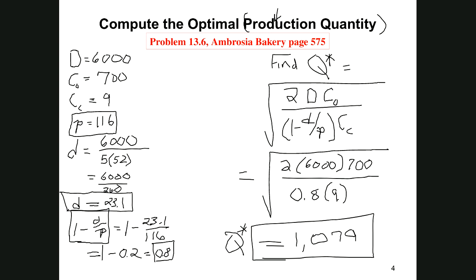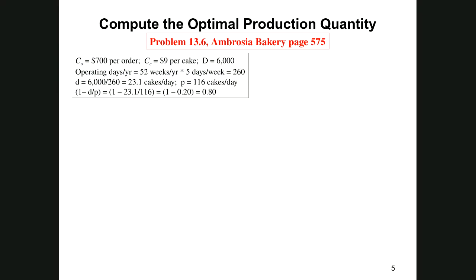The next question is to determine the minimum total annual inventory cost. If we remember the total annual inventory cost, it's the optimal order quantity Q star times 1 minus D over P divided by 2 times our carrying cost, plus D divided by Q times our ordering cost. D divided by Q is the number of orders in the year.